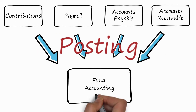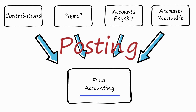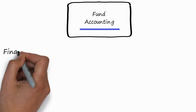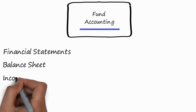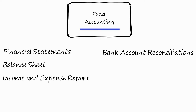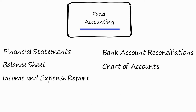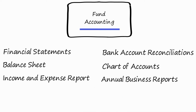All of these modules feed their data into the fund accounting module, which is the record-keeping part of PowerChurch. It has your financial statements, like your balance sheet and income and expense reports. It's where you will do your bank reconciliations and set up your chart of accounts. It also provides reports for your annual business meeting.